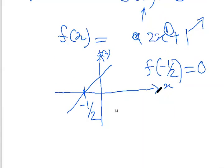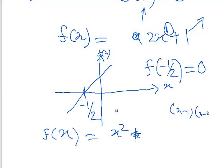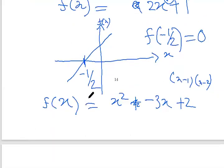Now if we talk about nonlinear functions, let's start with a quadratic equation — something like x squared minus 3x plus 2. This is a second-order polynomial in x. The highest degree is 2, so this is a second-order polynomial, also called a quadratic equation.